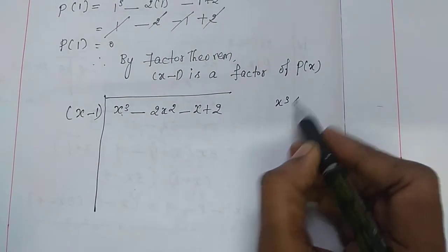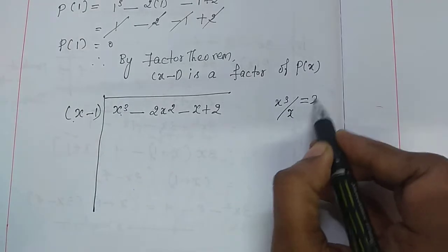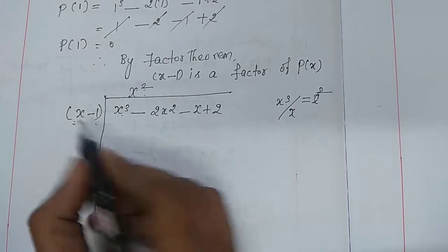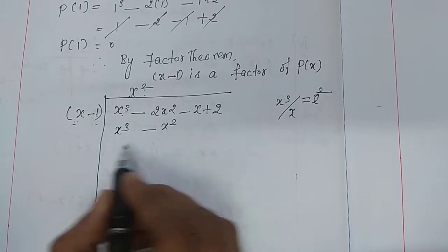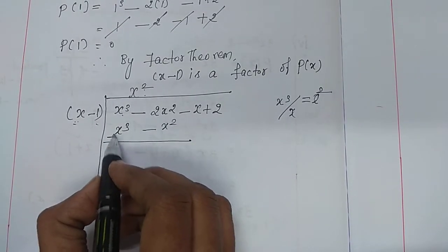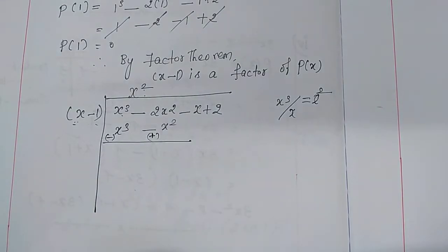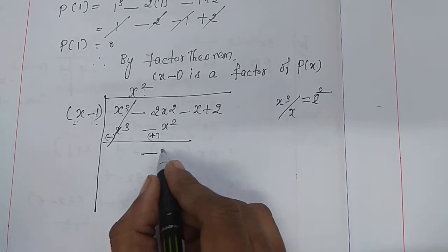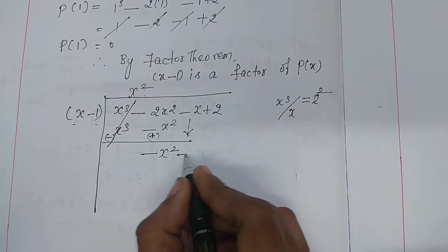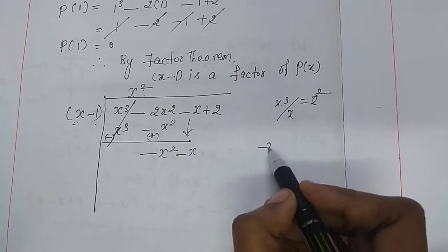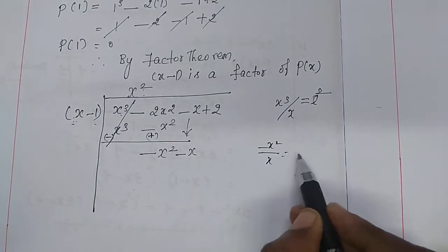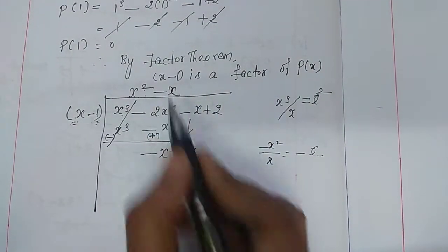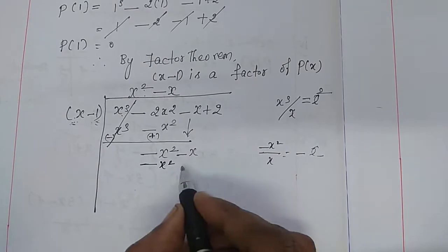So, x cube divided by x, we get x square. Now multiply these two terms with x square: x square into x is x cube, minus 1 into x square is minus x square. Change the sign — minus here becomes plus. These two terms are cancelling. Now, minus 2x square plus x square, we get minus x square. Bring down the term minus x. Now, minus x square divided by x, we get minus x. These two terms multiplied with minus x, we get minus x square and plus x.